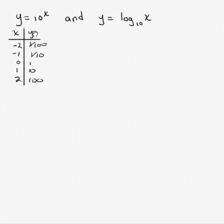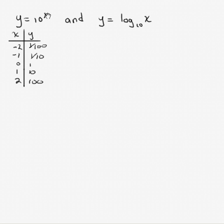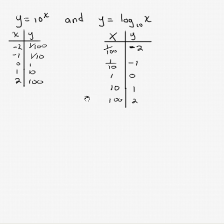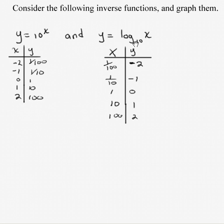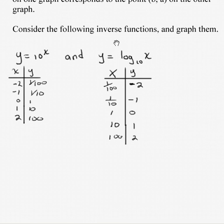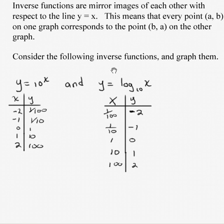If I put in negative two, I get one one hundredth. Put in negative one, I get one tenth. Substitute in zero for x, I get one. Substitute one for x, we get 10. Substitute two for x, we get 100. Now, the interesting thing is that I'm telling you, because we haven't really discovered this yet, that these two functions are inverse functions. And the reminder here is, if they're inverse functions, if we have the point ab on one graph, we have the point ba on the other.